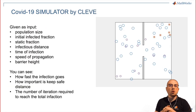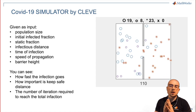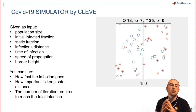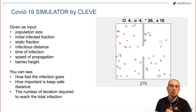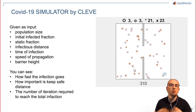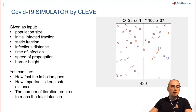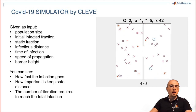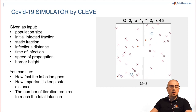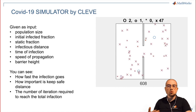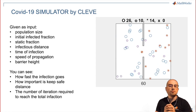This is our simulator by Cleve. We have here a list of parameters we can give as input to our simulator. The simulator then computes and elaborates all the different information and gives as output the graph you can see on the right. You can see how the infection goes, how important it is to keep safe distance between different persons, and how long it will take for the infection to reach the peak and spread through all the community.